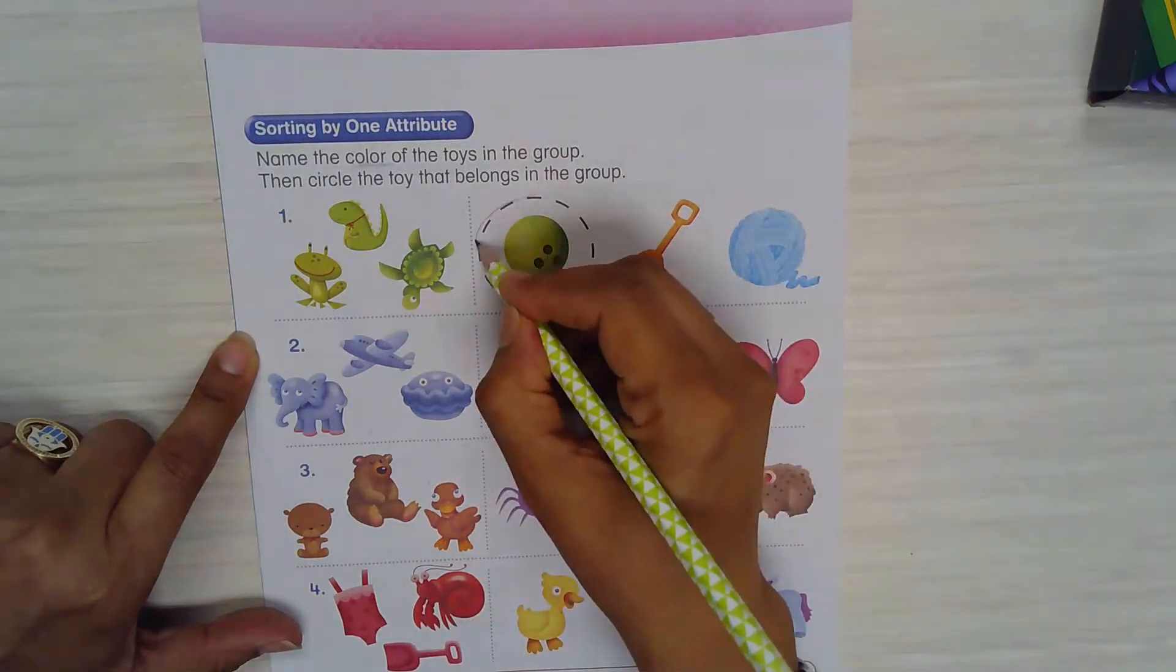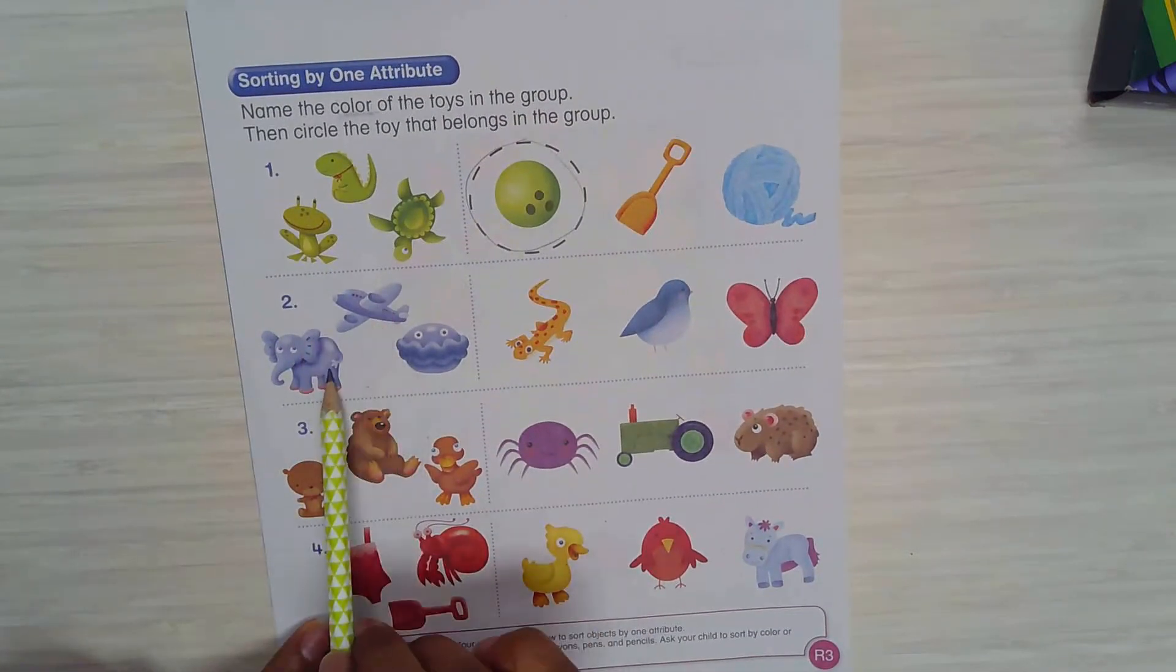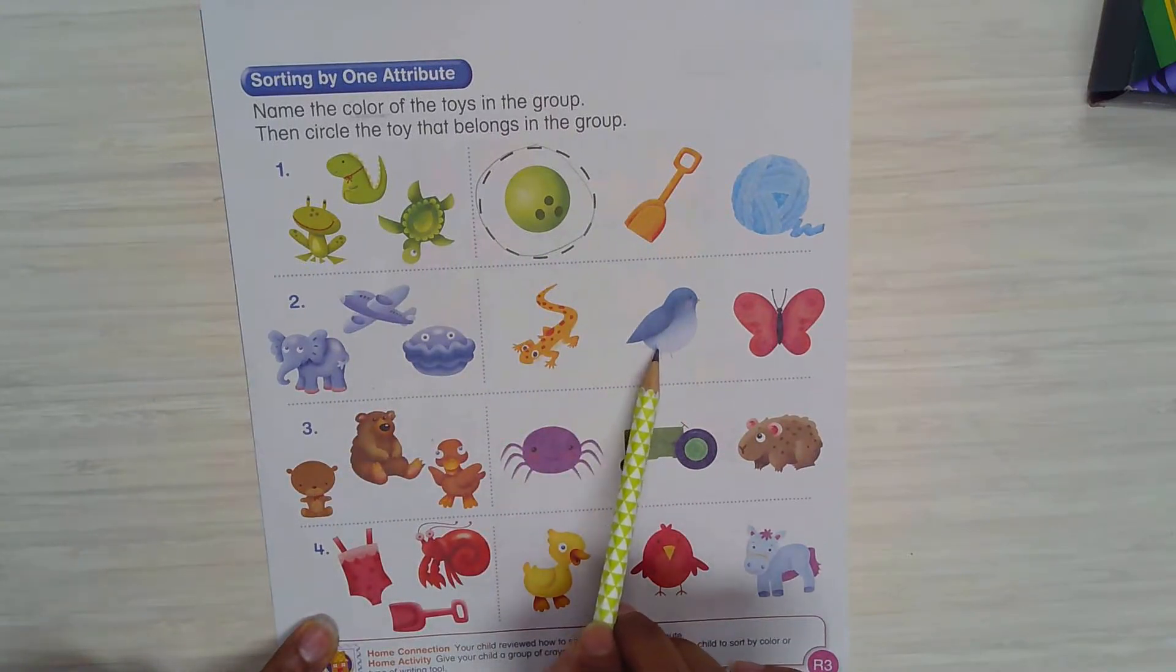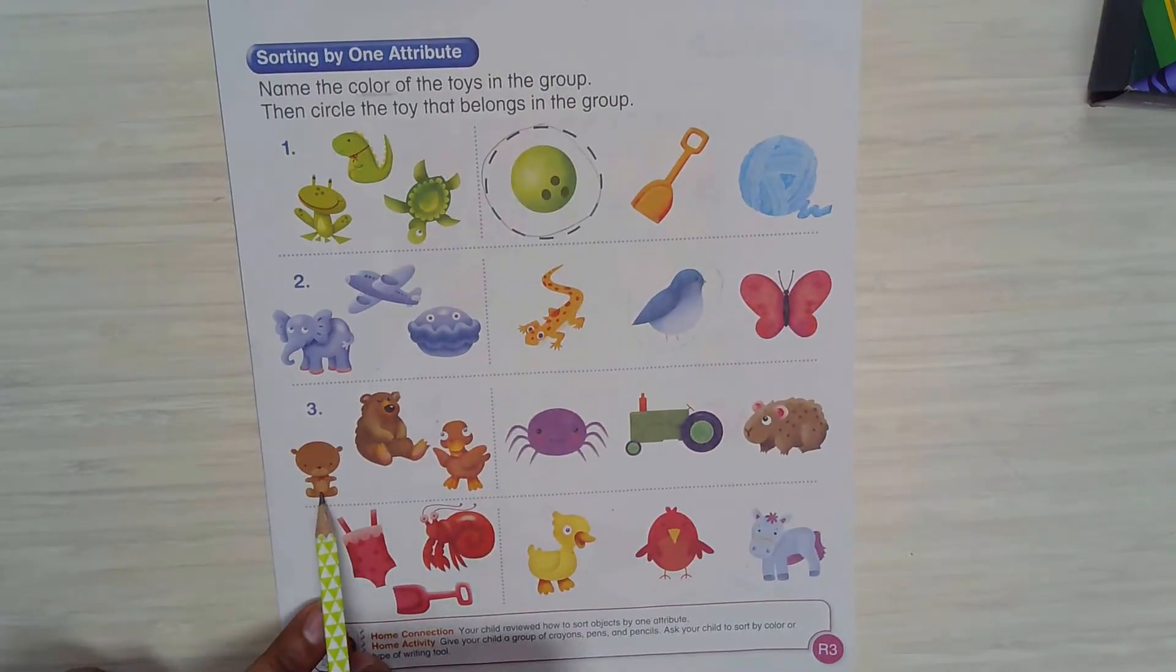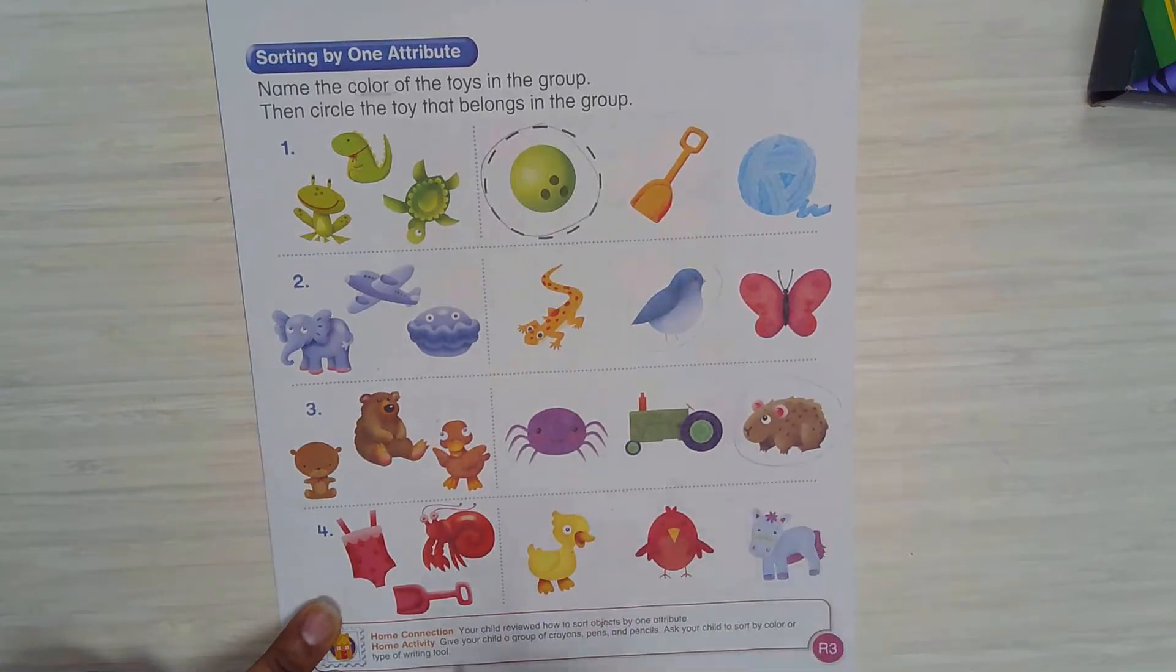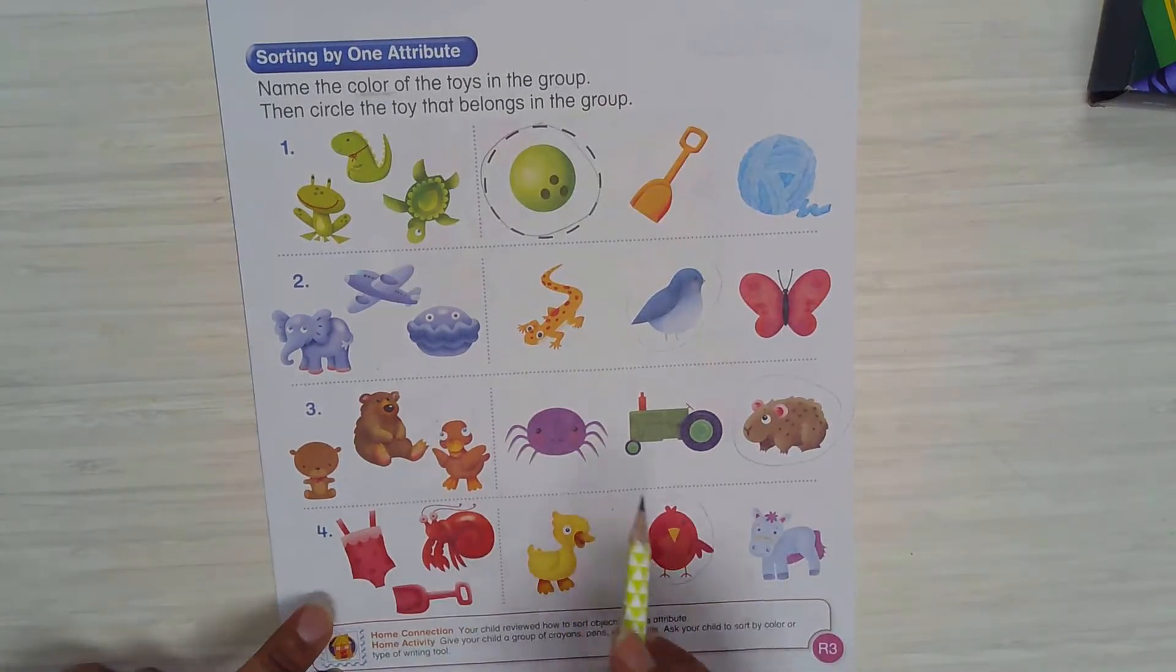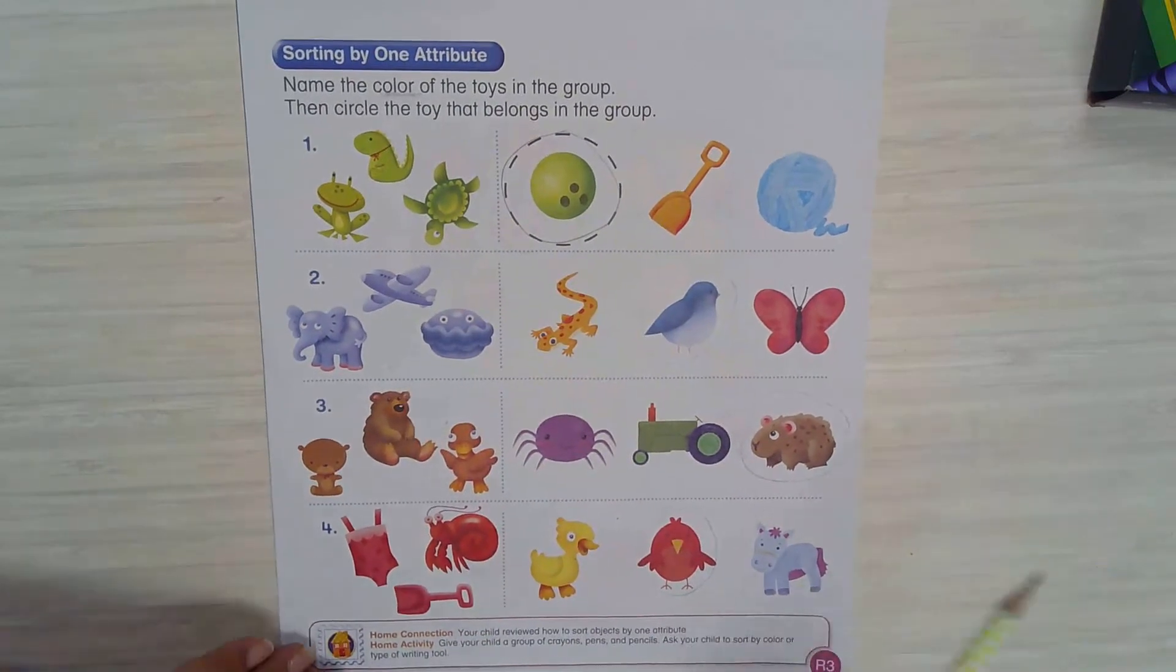All right, second one, what color? This purple, so I'm looking for purple color, blueish purpley, and circle. Brown. Yes. Red. Very good. So now you're sorting by color.